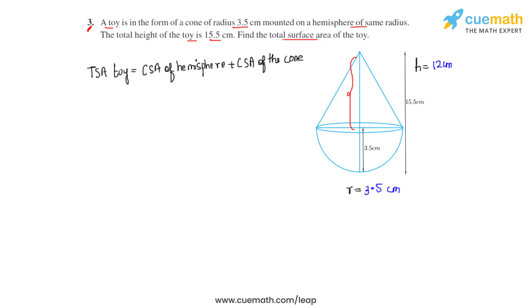The formula to find the curved surface area of a hemisphere is 2πr², and the formula to find the curved surface area of the cone is πrl. We are using r as the same notation for both the cone and the hemisphere because the radius for both of them is same.